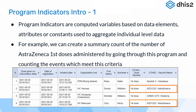Program indicators are computed variables based on data elements, attributes, or constants used to aggregate individual-level data. We use program indicators whenever we want to calculate or compute something which might be a complete combination or a standalone variable based on data elements, attributes, or constants. These are mainly coming from tracker data. For example, if you want to count the number of tracked entities who have a disease, we can do that using a program indicator.